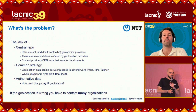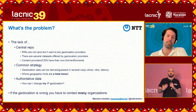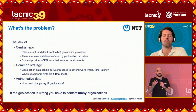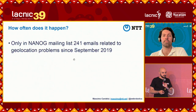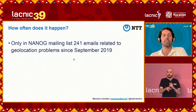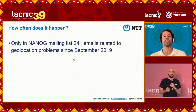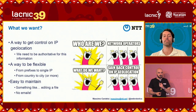There is also a lack of alternative data. If you want to change the geolocation of your own IP addresses, you essentially have no way to really influence that heavily. What you usually have to do is send emails to many organizations. On the NANOG mailing list alone, there are 241 emails about geolocation problems since 2019 — and that's just one mailing list. It's a really recurring problem.